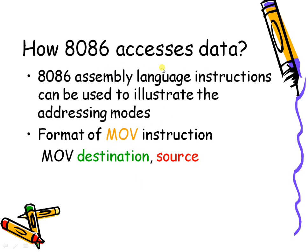How does 8086 access data? 8086 assembly language instructions can be used to illustrate addressing modes. For understanding addressing modes, we will use the MOV instruction, which is mainly used for copying the source operand into the destination operand. An instruction is a command given to the processor so that it can perform a particular task specified by the user.